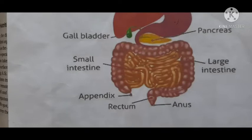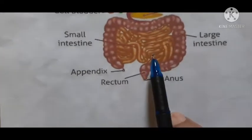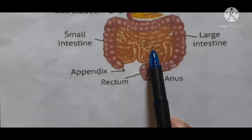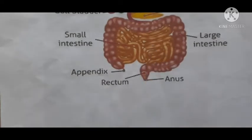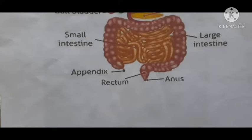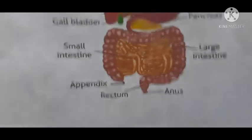The length of the small intestine varies in different animals depending on their feeding habits. In herbivores, which eat plants, the small intestine is longer because plant cellulose is a complex carbohydrate that is very difficult to digest. In carnivores, which eat meat, the small intestine is shorter because meat can be digested more easily.